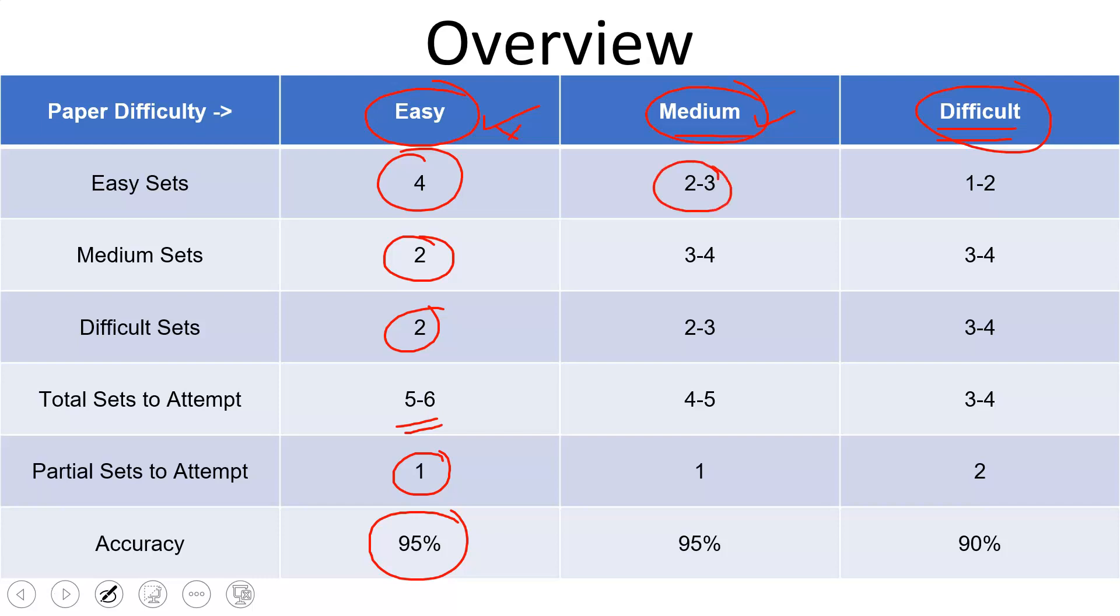Let's move into the medium level of difficulty paper. Easy sets would be two to three. Medium sets would be more, three to four. And difficult sets, that would be around two to three. Now total sets to attempt would be four to five. Partial would be one. Again, I've kept 95% accuracy. This is what you should target. Because not that difficult sets, so they should be correct.